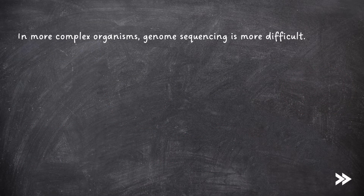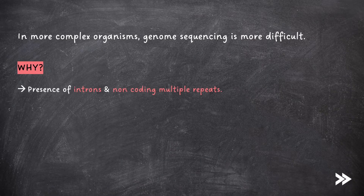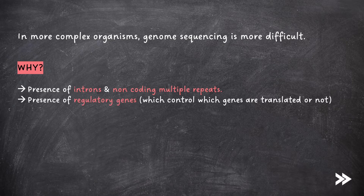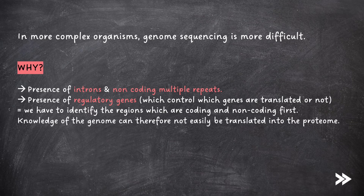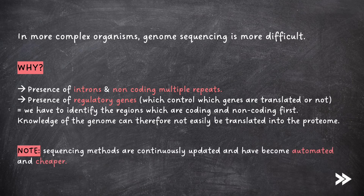In more complex organisms, genome sequencing is more difficult. This is due to a number of factors, including the presence of introns and non-coding multiple repeats, as well as the presence of regulatory genes which control which genes are translated or not, meaning that we have to identify the regions which are coding and non-coding first. Knowledge of the genome can therefore not easily be translated into the proteome. Note that sequencing methods are continuously updated and have become automated and cheaper.